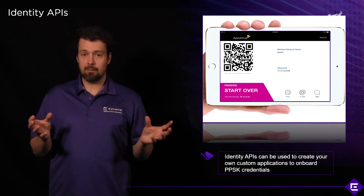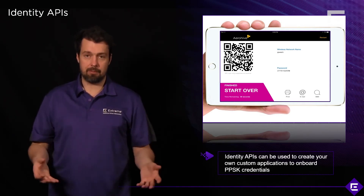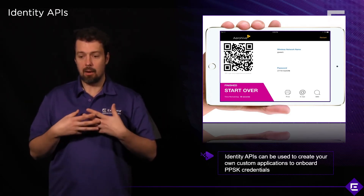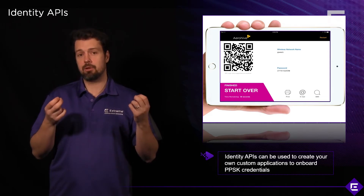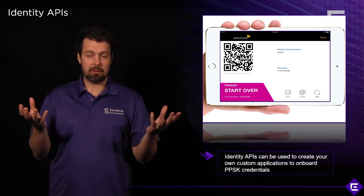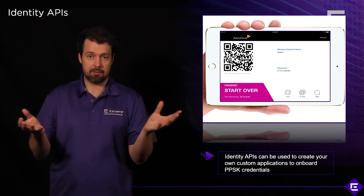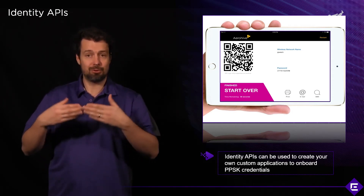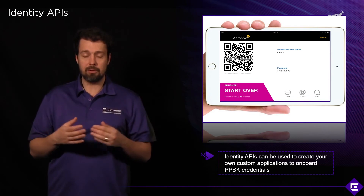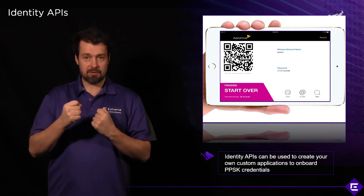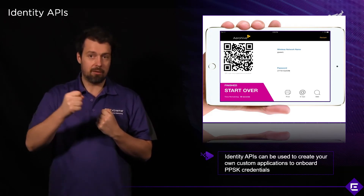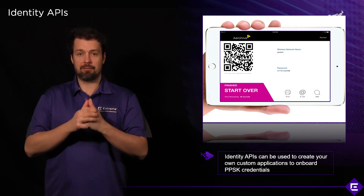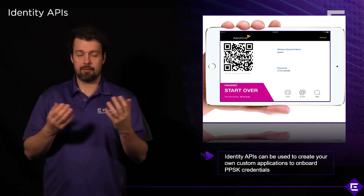Email and phone number serve as channels for distributing the PPSK. When not using an app — such as through a captive web portal — the PPSK can be shared natively from Extreme Cloud IQ via email or SMS. This also verifies the user's identity: by distributing the PPSK to a valid email or phone, you confirm that person exists and retain their contact details on record if needed later.